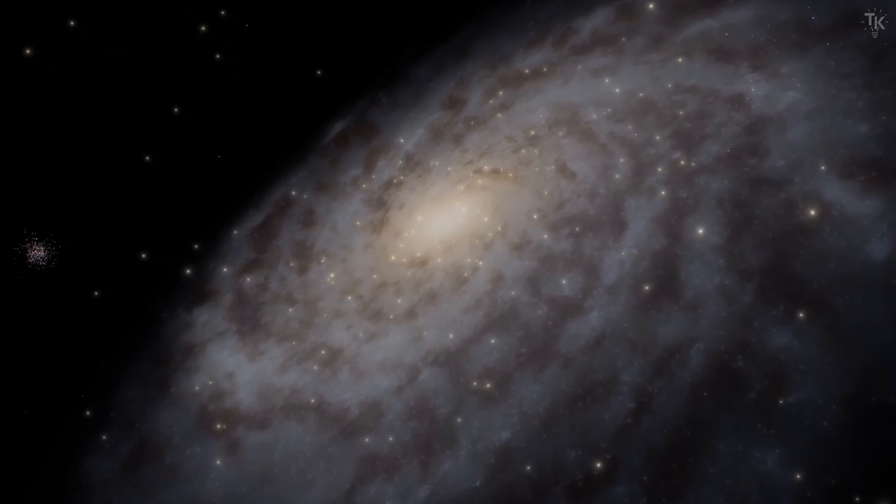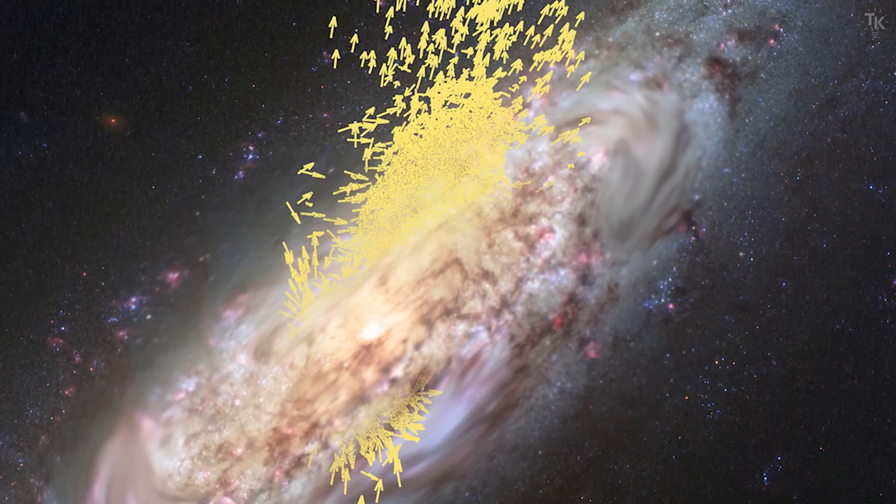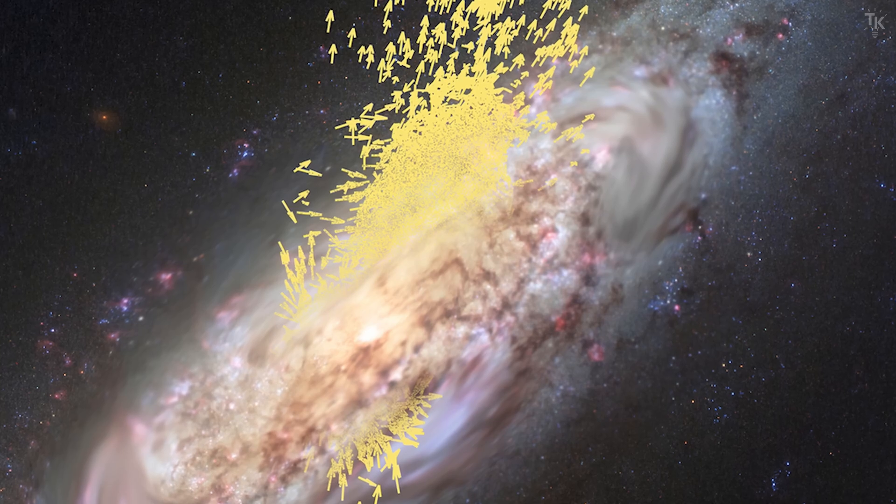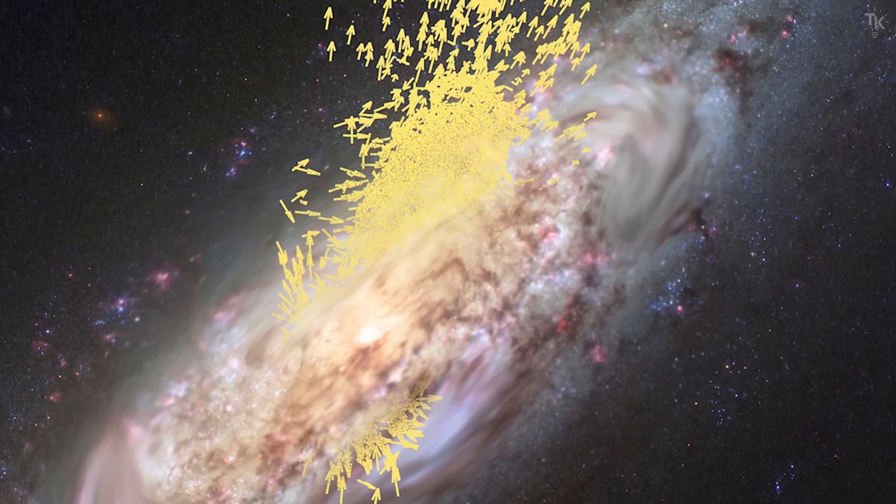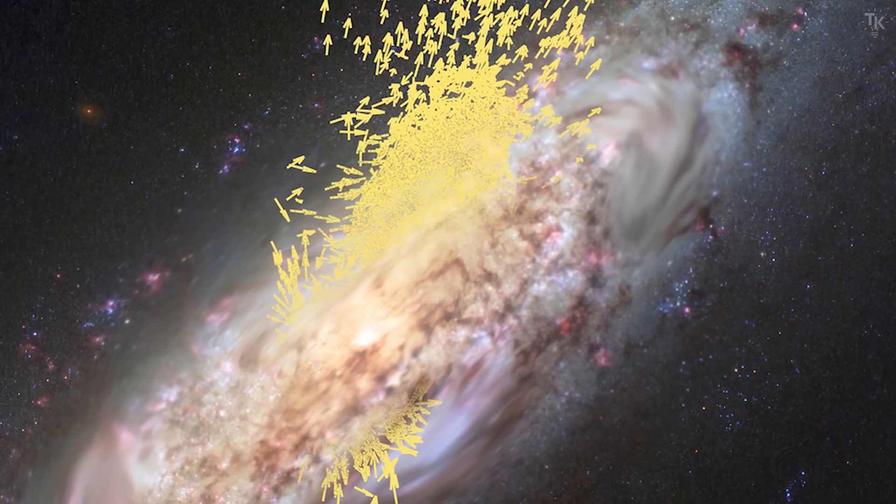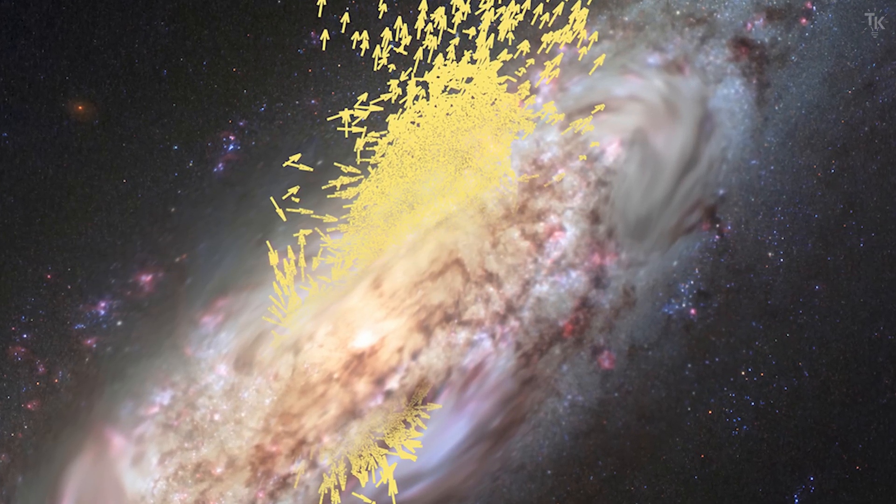Normally, stars move in the direction of the galaxy's rotation. However, Gaia's observations revealed that about 30,000 stars are moving in a different direction. Why are only some stars moving in this unusual way? It turned out that these were the traces left behind by another galaxy that collided with the Milky Way.